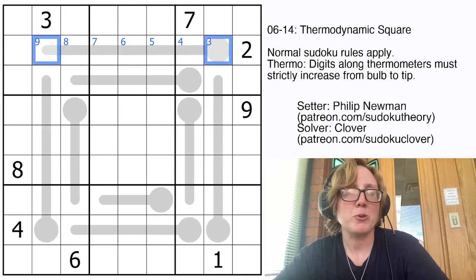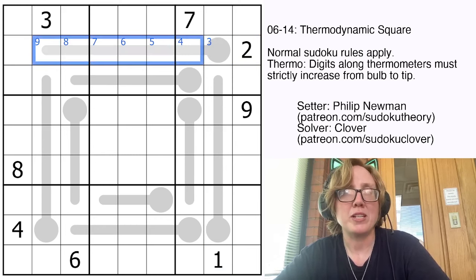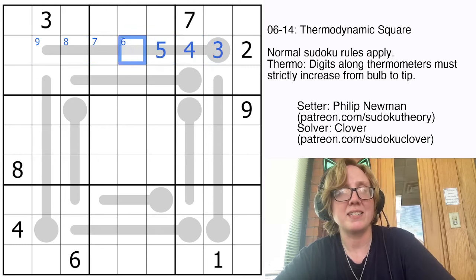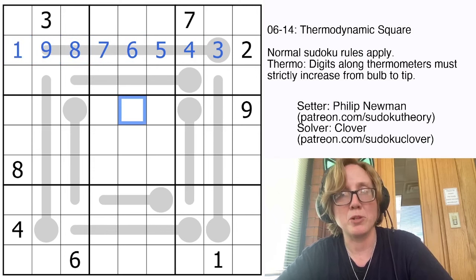And it turns out if we make it a 3, we actually have to go all the way up to 9 to finish it, so this can't be anything bigger than 3 either. That has to be exactly 3, which fills in the rest of the thermo and also tells us that's a 1.